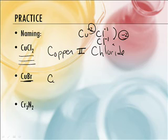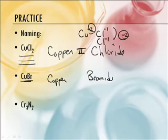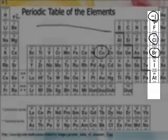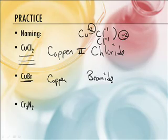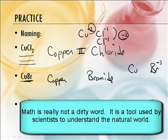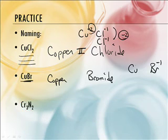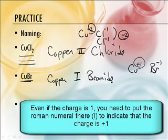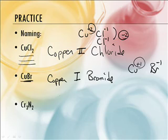Let's do the next one — copper again, and Br. Last name is bromide — it's in the same column as chlorine, so bromide. His charge is minus one. We work backwards: Br's charge is minus one, so all the minuses add up to minus one. This has to be plus one. So it's copper one bromide. But wait — put the Roman numeral one. Guys, you have to put the Roman numeral there even if the charge is plus one. That's a common mistake I see with students.